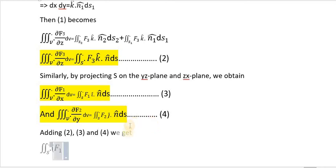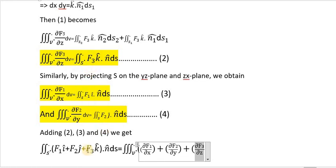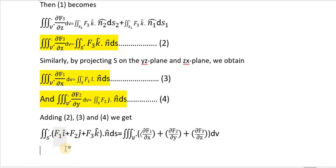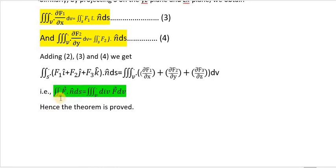Now, by adding all three equations 2, 3, and 4, we get the double integral over surface S of (F1 î plus F2 ĵ plus F3 k̂) dot N̂ dS equal to the triple integral over V of (∂F1/∂x plus ∂F2/∂y plus ∂F3/∂z) dV. Since ∂F1/∂x plus ∂F2/∂y plus ∂F3/∂z is nothing but divergence F, the surface integral of F dot N̂ dS is converted into the volume integral of divergence F dV. Hence, the theorem is proved.